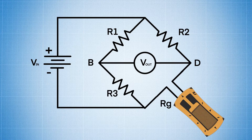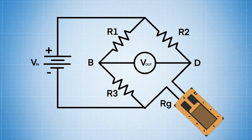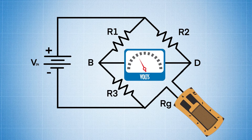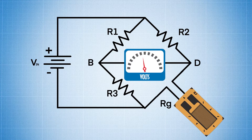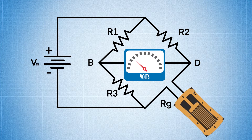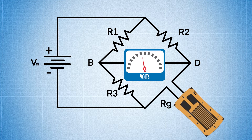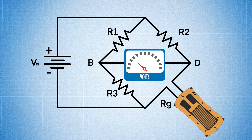Since RG is your variable resistor indicated by your strain gauge, any change in resistance in RG will throw the bridge out of balance, and the voltage measured across points B and D is directly proportional to the change in resistance that the strain gauge sees. That's exactly how you can measure the change in strain by measuring the voltage output coming from your bridge.